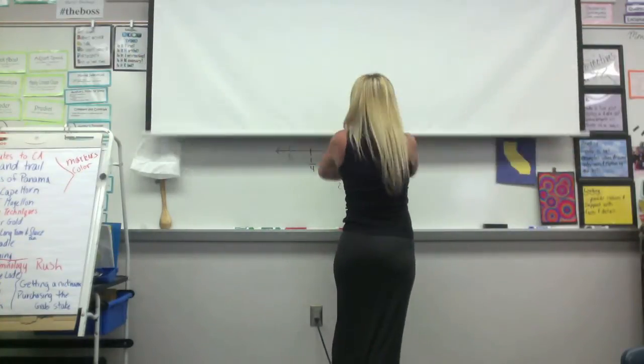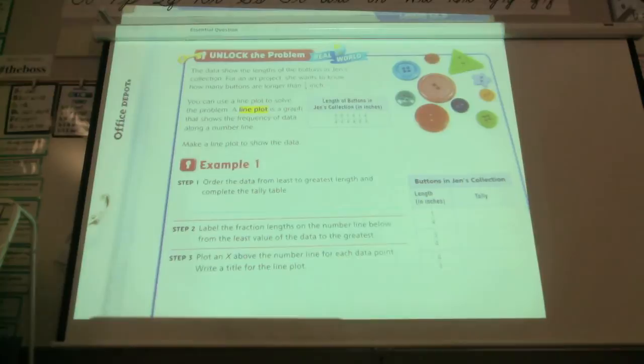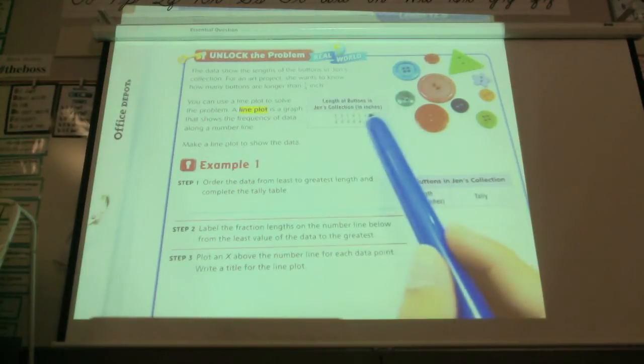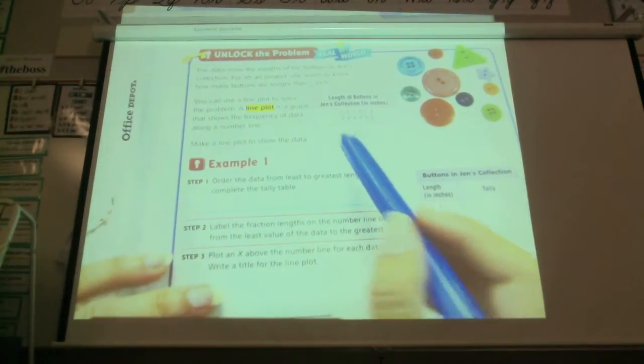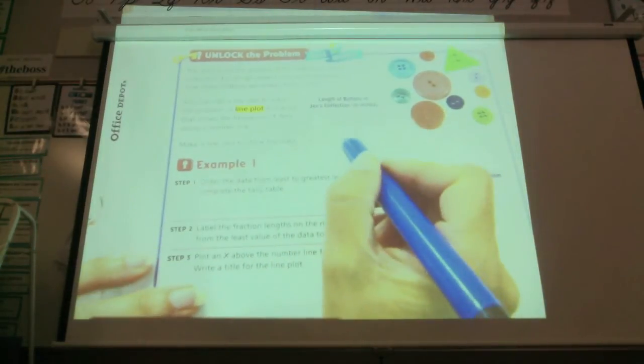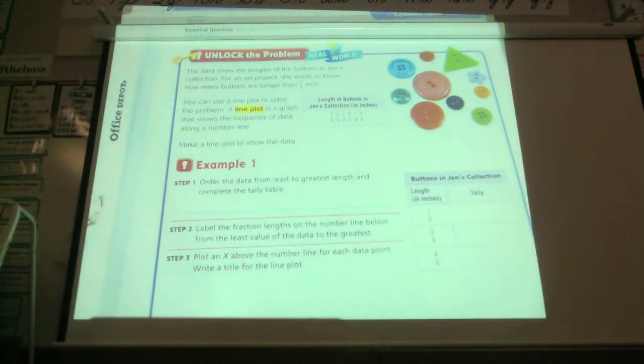All right, go ahead and open to 12-5. The data show the length of the buttons in Jen's collection. For an art project, she wants to know how many buttons are longer than a fourth of an inch. You can use a line plot to solve the problem. A line plot is a graph that shows the frequency of data along a number line. So here are the length of her buttons. She has, and they're based on an inch. It tells us inch up here. So there's a one-fourth, three-fourth, one-fourth, four-fourths, one-fourth, and four-fourths again.